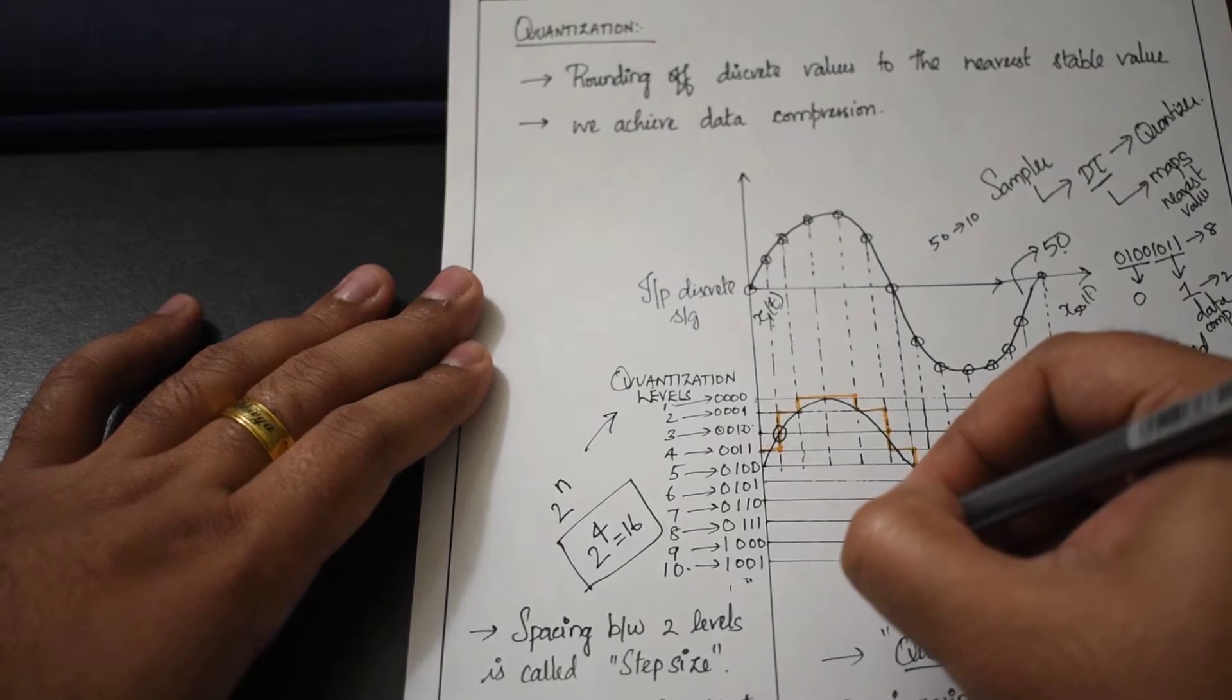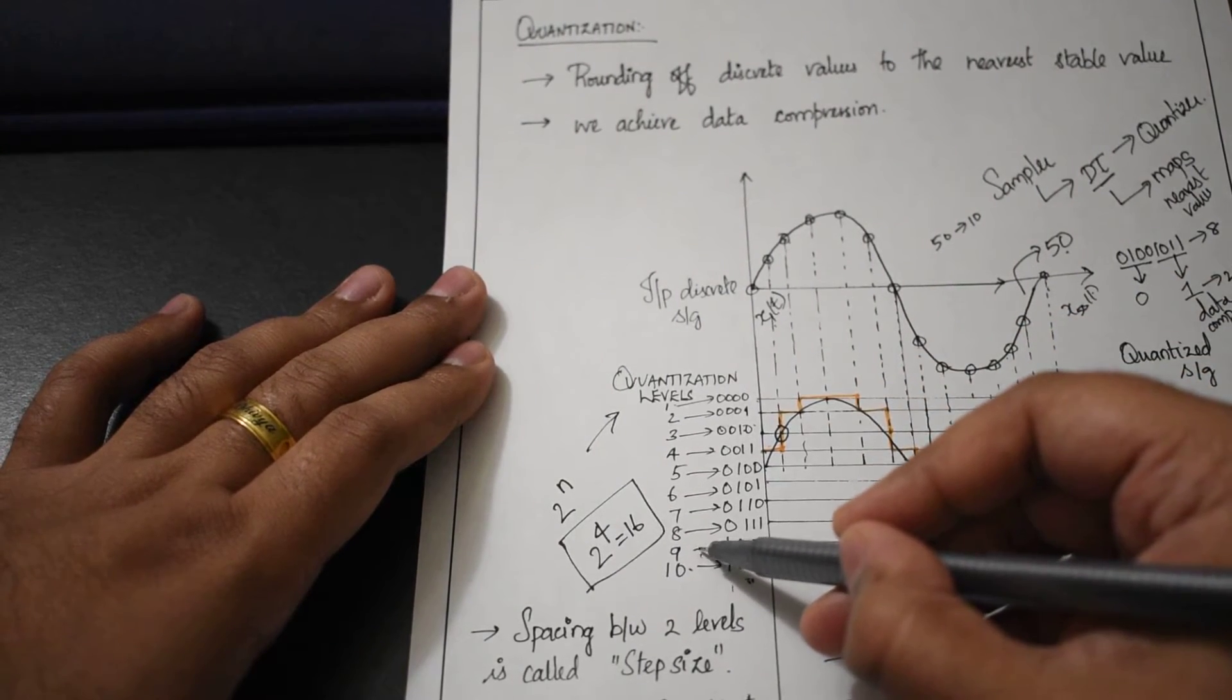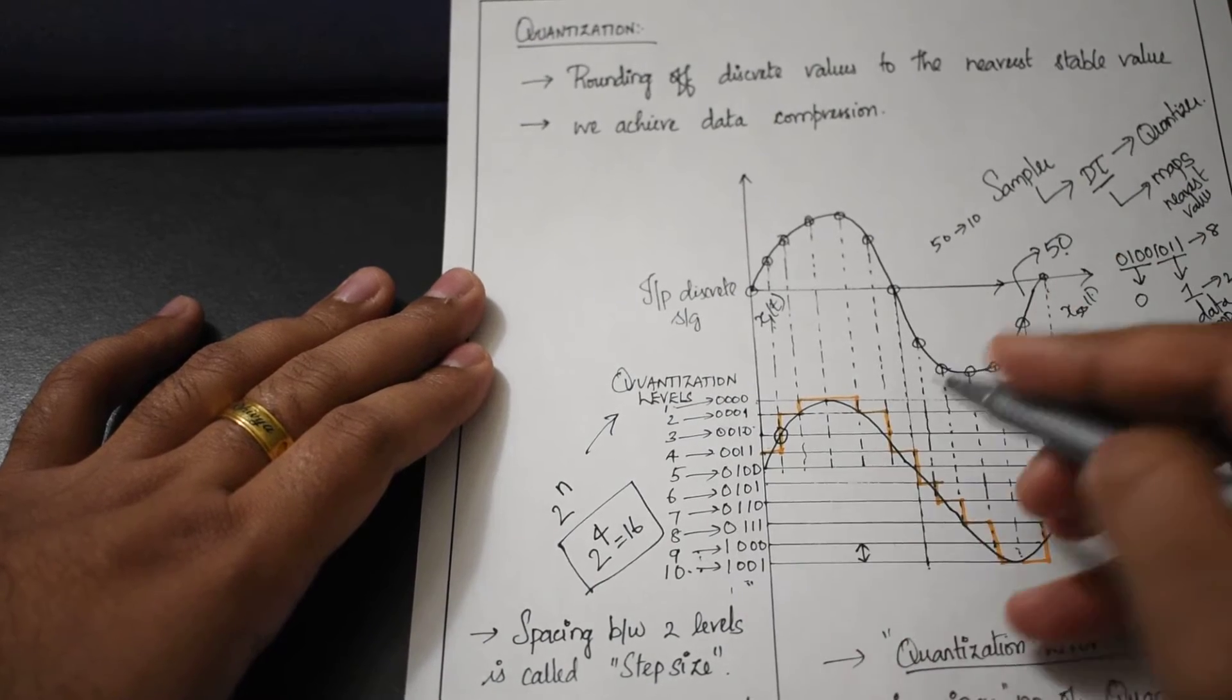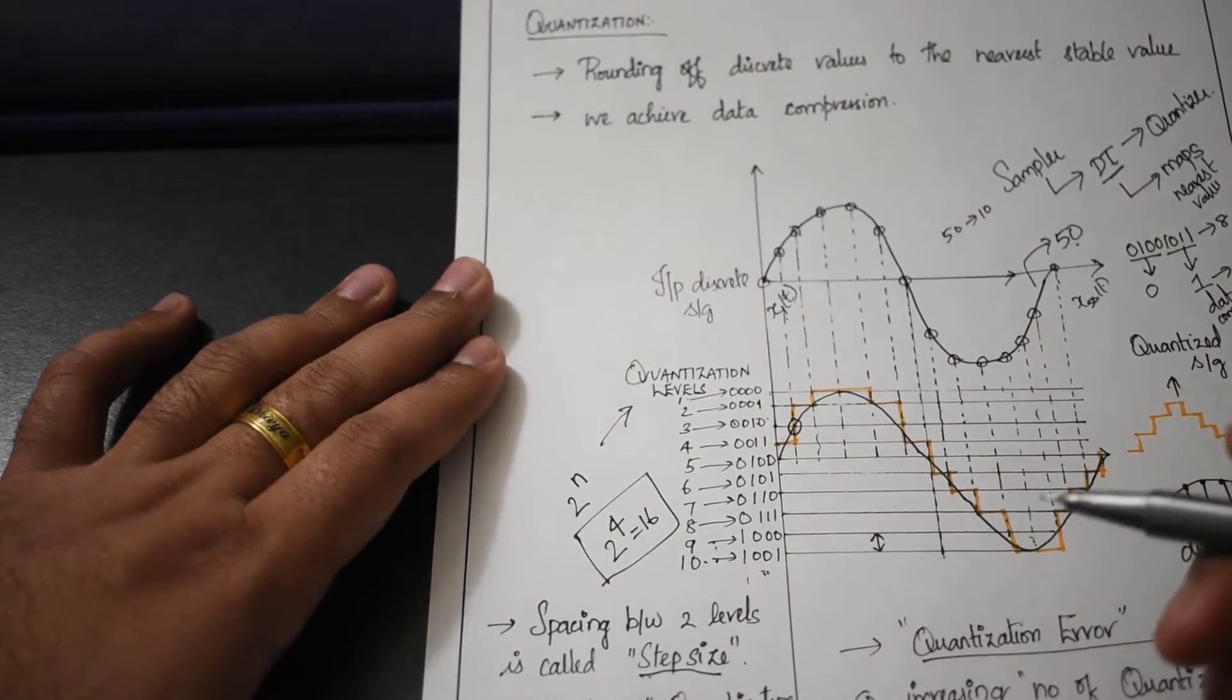The difference between these two levels - let's say here I'm considering quantization level 9 and quantization level 10 - the difference between two levels in quantization is called the step size.